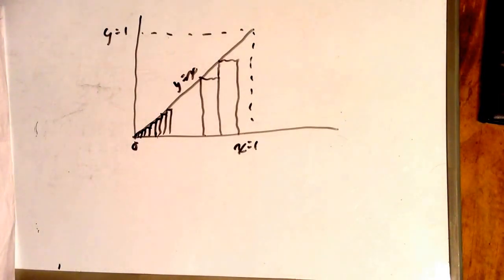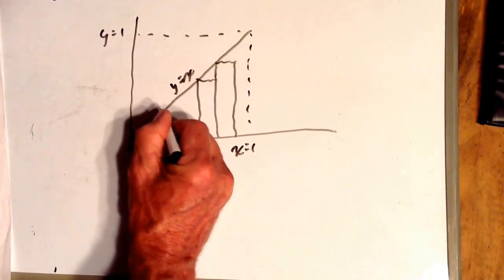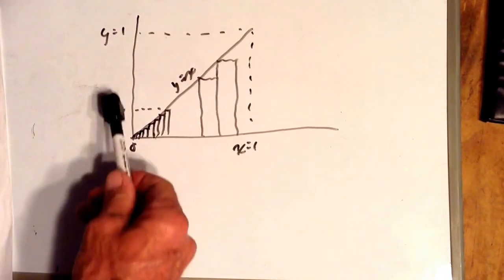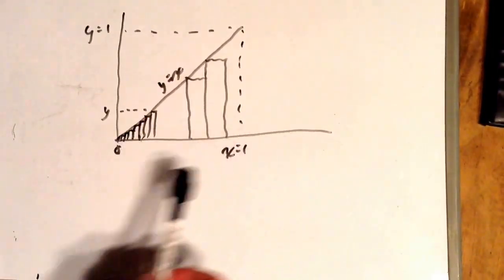The more rectangles we use, the closer the sum of the rectangular areas comes to the triangle's area. The height of each rectangle is y. Like this rectangle, it's y high. Y is a variable along this line, x is a variable along this line.